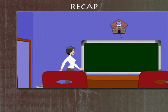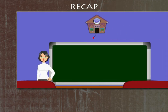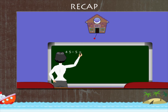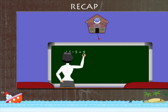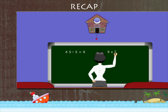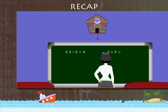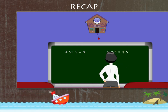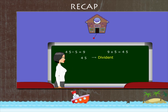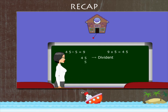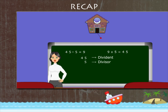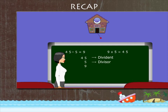Teacher Lucy takes a revision: 45 divided by 5 is equal to 9, because 9 multiplied by 5 is equal to 45. Here, 45 is called the dividend, 5 is called the divisor, and the answer 9 is called the quotient.